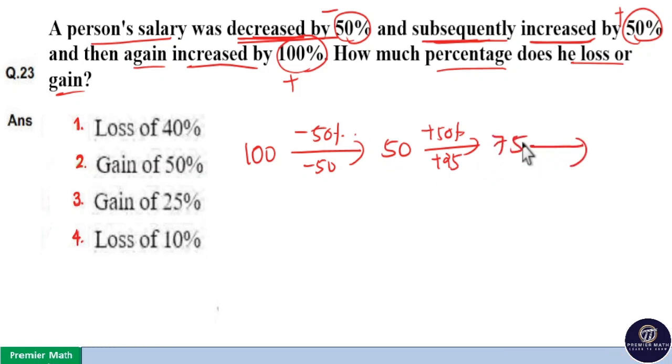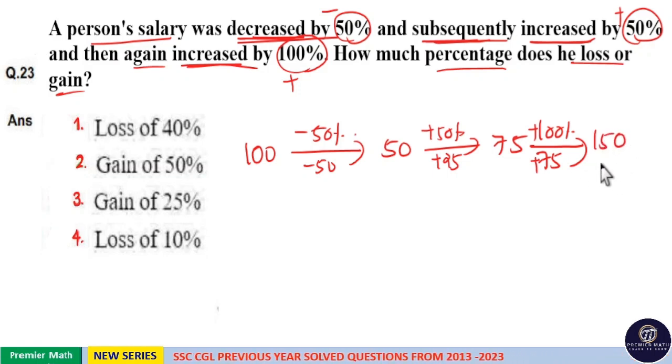Now again this 75 is increased by 100%. 100% increment on this 75 means 100% of 75 is 75 rupees. So 75 plus 75, 150 rupees is the final salary.